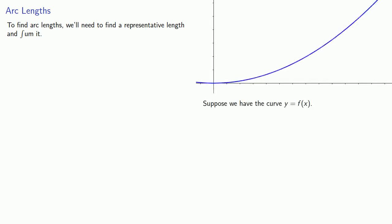Suppose we have the curve y equals f(x). A representative length is that between the point (x, y) and another point x plus a small bit of the x-axis, y plus a small bit of the y-axis, x plus dx, y plus dy.